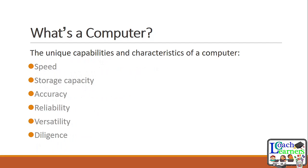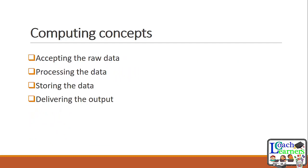What makes a computer powerful? The speed of processing information is very fast. It also has enhanced storage capabilities and is very accurate — arithmetic can be done very quickly with great accuracy. It's reliable, versatile, and diligent. The core computing concept is that a computer accepts raw data, processes it, stores it, and delivers output.